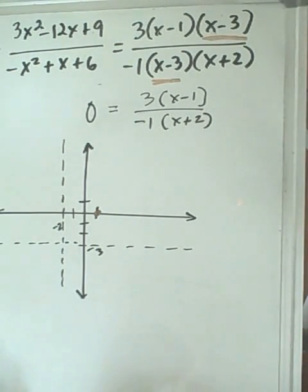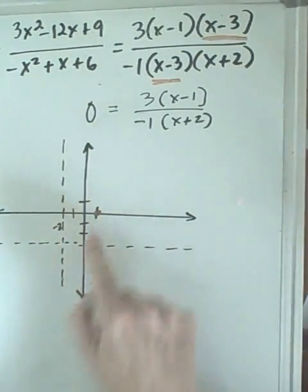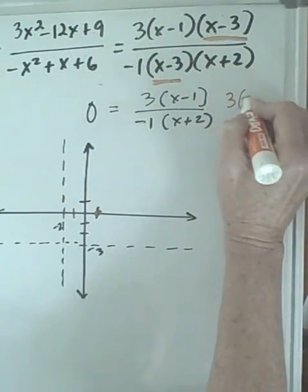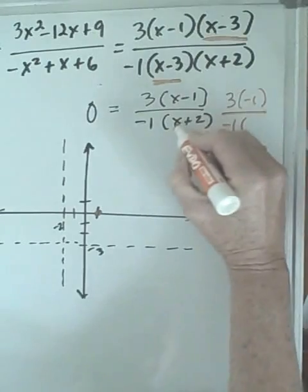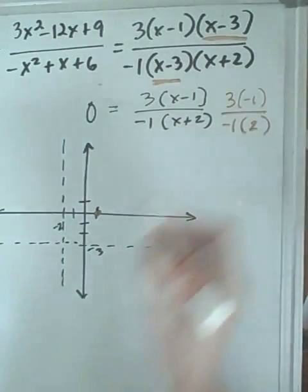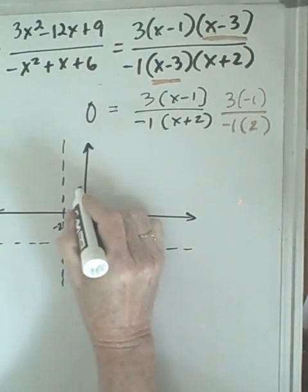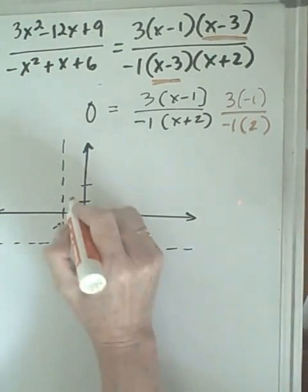The next thing we look for is our y-intercept. That's where it crosses the y-axis. The x-intercept is our 0, which is 1. And to find our y-intercept, we set x equal to 0. Well, if we put a 0 into each of these, we're going to get 3 times negative 1 over negative 1 times 0 plus 2 is 2. So, we're going to get 3 halves. So, that means our y-intercept is going to be at 3 halves. And 3 halves is 1 and 1 half. So, we know at 1 and 1 half, we'll have another point.